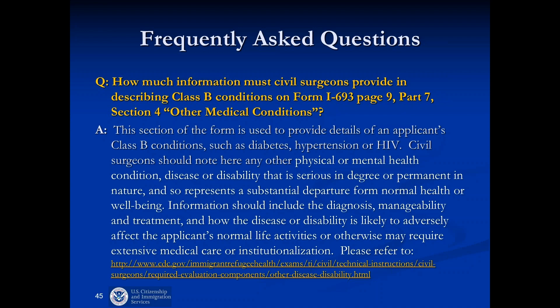From the USCIS perspective, the only thing we have to go on is the date of signature by the civil surgeon. If the exam was complete before there was a change and you're just not getting around to signing it, I personally think if everything was accurate as of the day before the change, I don't see any issue with indicating that as the date of signature. But if it's after, the officer is going to look at what was required on that date, and if there was a lagging signature and something changed and wasn't handled, it will likely result in a request for evidence.